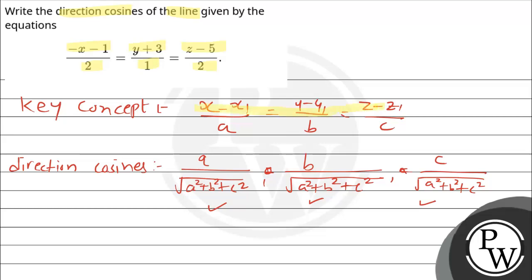X minus x1, Y minus y1, Z minus z1, with a, b and c below. We have to take this form. Since x is negative in the given line, I take minus common. This gives x plus 1, and in the denominator we have minus 2.